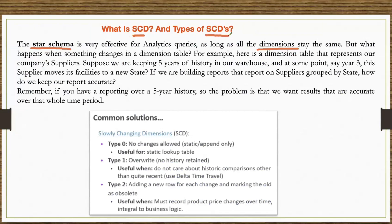If any dimension data is getting changed at source, how you are going to manage in target — the concept is called SCD, for dimension tables. We primarily divide it into four parts. Type 0 is mainly for static tables — every project will have static tables where you prepare data and insert only, which is called append or insert only. No changes are allowed.